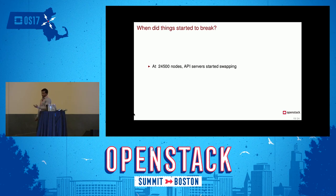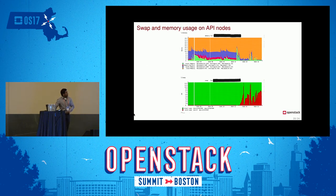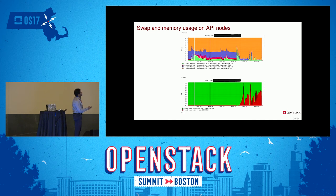At 24,000 nodes — when we were importing them — the API server started swapping. The top graph shows memory usage and the bottom shows swap usage. The orange is used memory, which went up over time, and the red is swap usage, which also went up. It all happened on week 13.